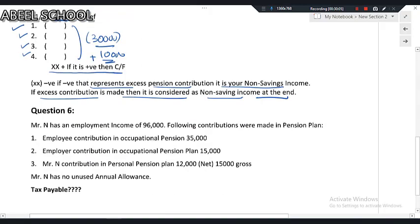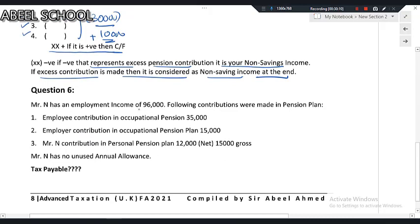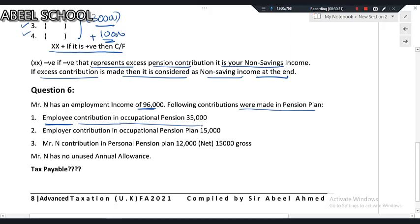Let us look at a worked example. Mr. N has employment income of £96,000. Employee contribution in occupational pension plan is £35,000 — that is a deductible expense. Employer contribution in occupational pension plan is £15,000 — that is an exempt benefit. Mr. N's contribution in personal pension plan: net £12,000, gross £15,000. A key point: when an individual contributes in a personal pension plan (PPC) for himself, that contribution is not treated as an expense.